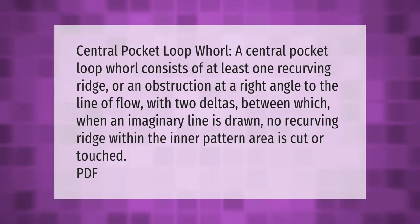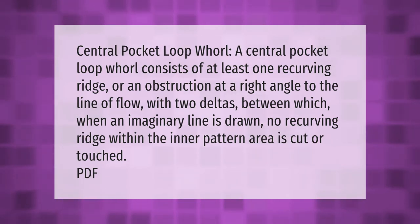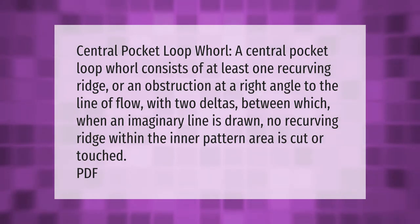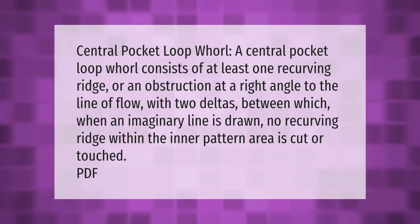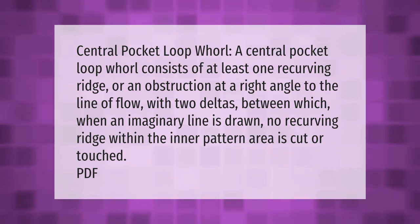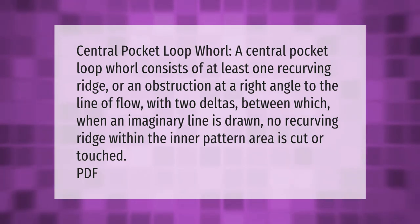Central pocket loop whorl. A central pocket loop whorl consists of at least one recurving ridge or an obstruction at a right angle to the line of flow, with two deltas between which, when an imaginary line is drawn, no recurving ridge within the inner pattern area is cut or touched.